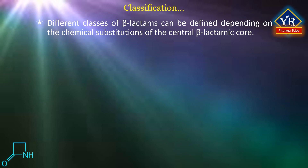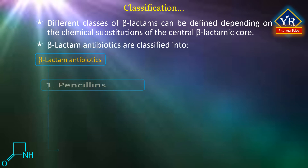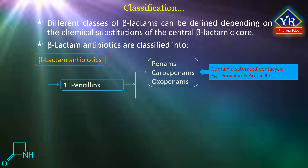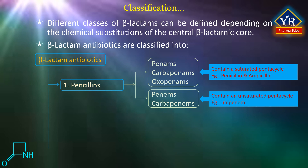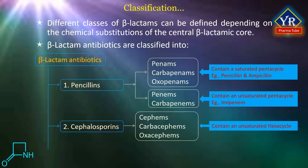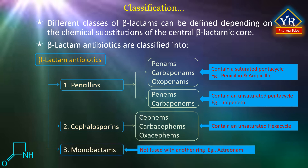Different classes of beta-lactams can be defined depending on the chemical substitutions of the central beta-lactamic core. The azetidinone can be fused with a saturated or unsaturated pentacycle or hexacycle, and position one of this ring can be occupied by a sulfur, oxygen, or carbon atom. Thus, penicillins including penams, carbapenams, and oxopenams contain a saturated pentacycle, for example penicillin and ampicillin. Penems and carbapenems contain an unsaturated pentacycle, for example imipenem. Cephalosporins including cephems, carbacephems, and oxacephems contain an unsaturated hexacycle. The carbapenems contain a beta-lactam ring fused to a carboxylic five-membered ring. Finally, the azetidinone or beta-lactam can be alone and not fused with another ring, originating monolactams or monobactams, for example aztreonam.